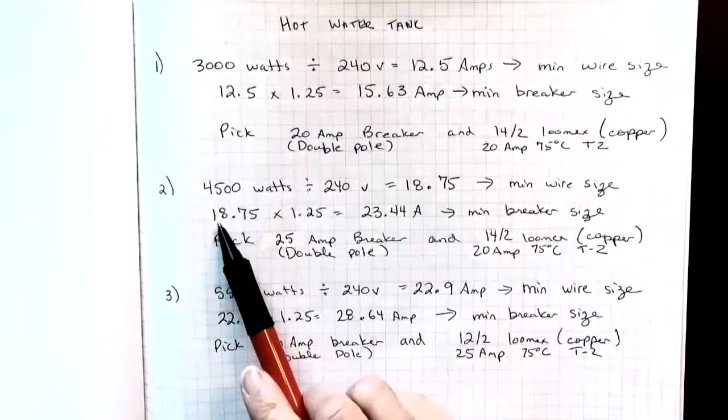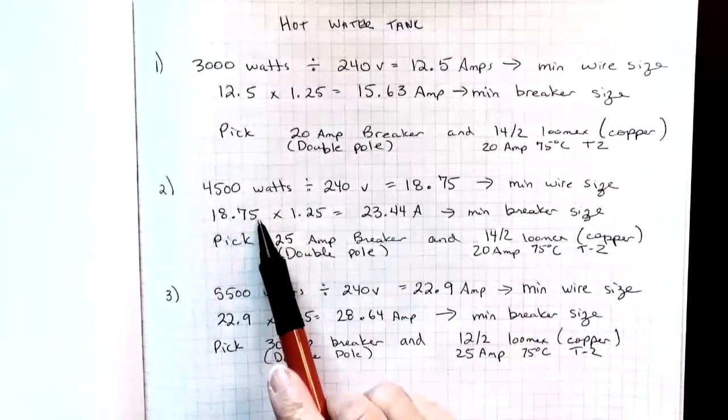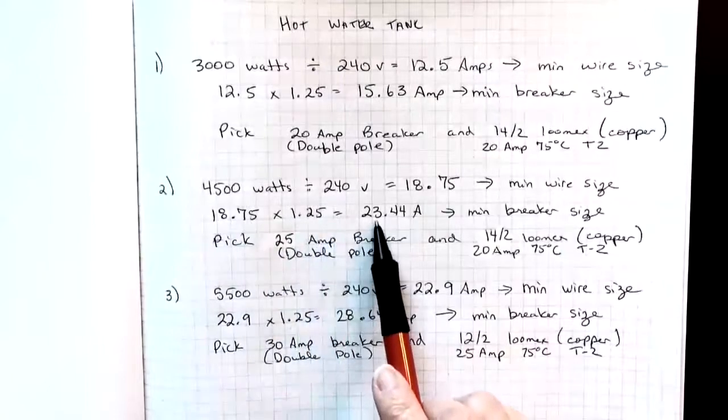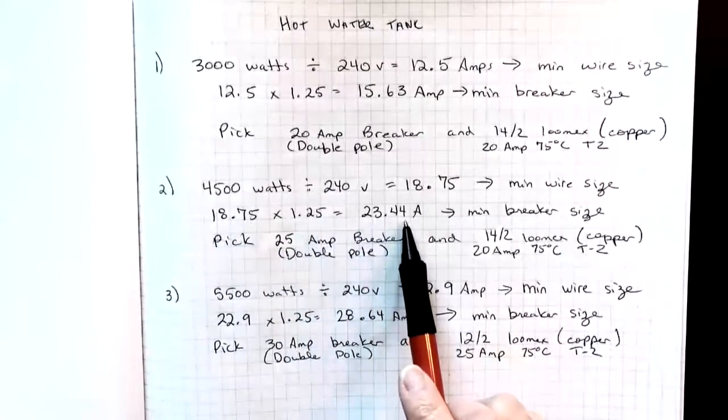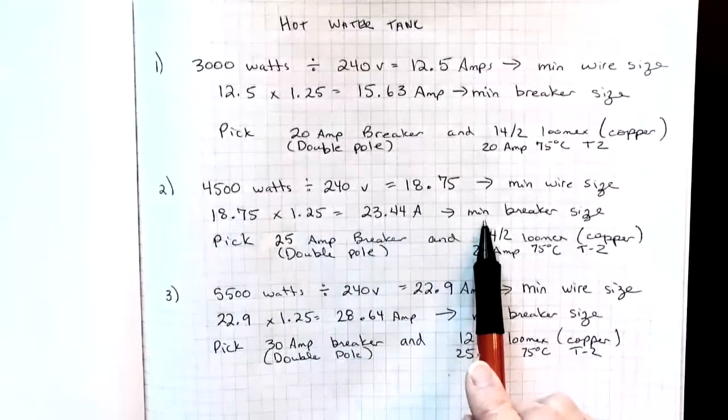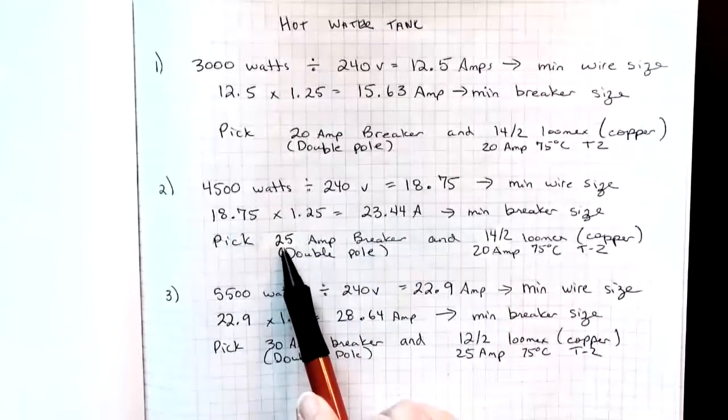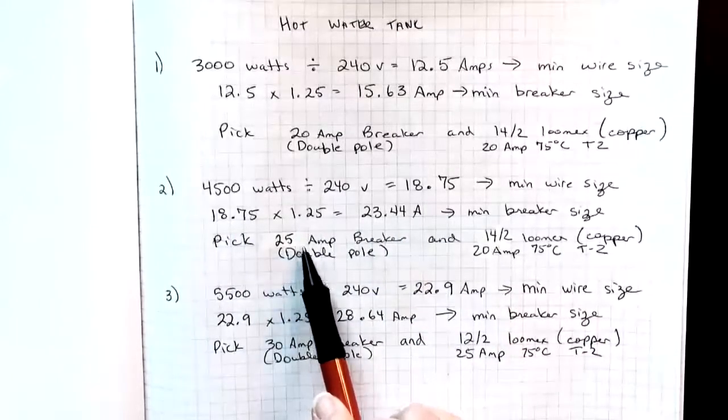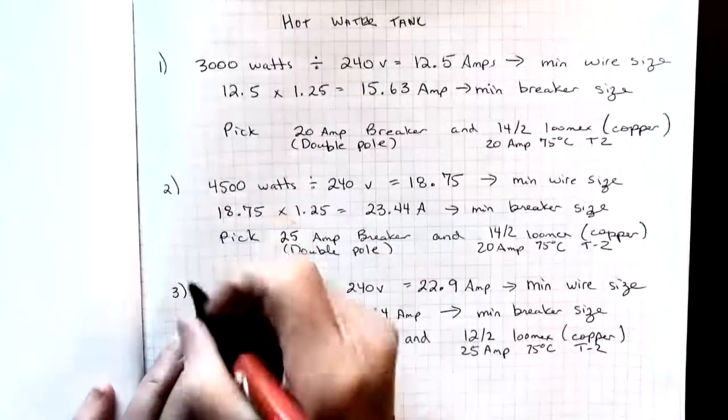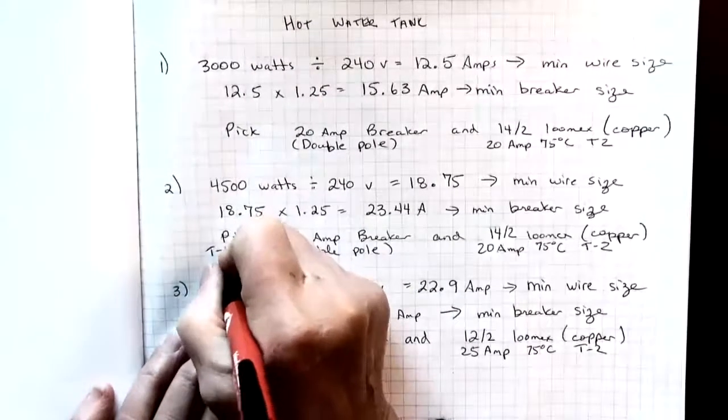Then to find the breaker I take the 18.75 times 125 percent gives me a 23.44 amp minimum breaker size. So I picked a 25 amp breaker. This comes from table 13 by the way.